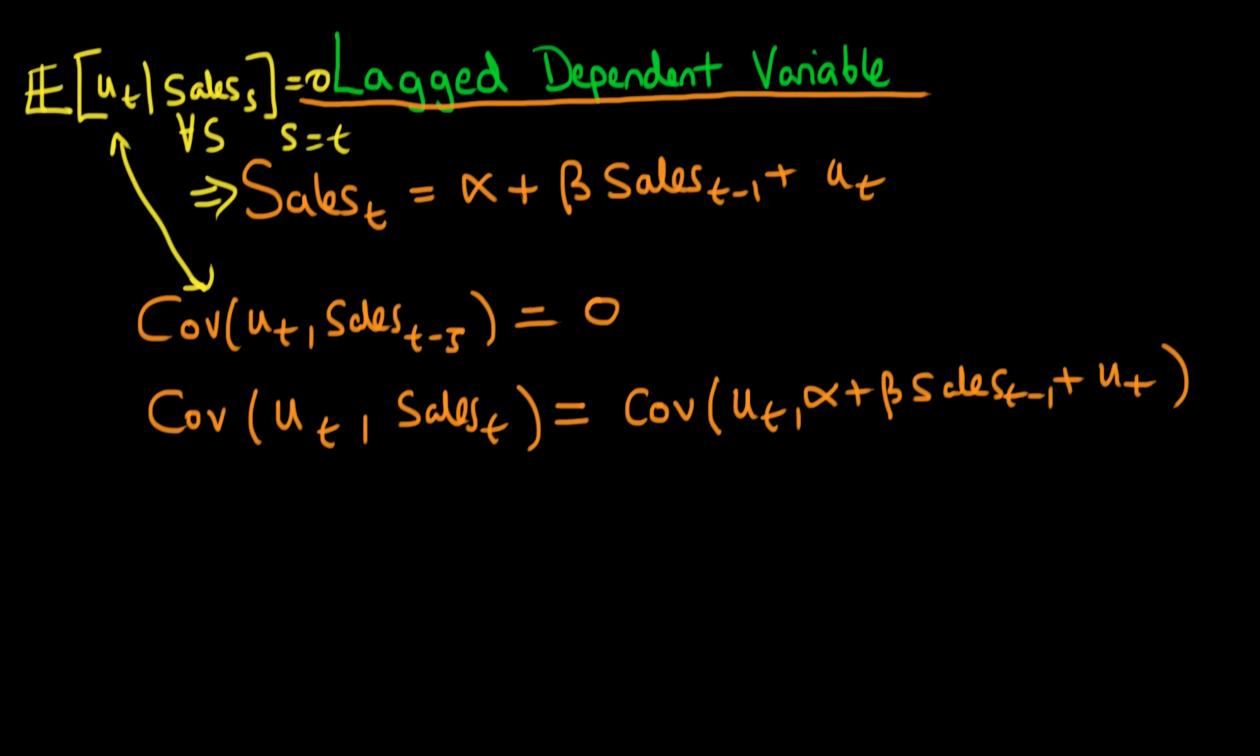And even though we can conclude that ut isn't correlated with alpha because it's a constant, and sales at time t minus 1 because there's no reason to suggest it would be, we cannot remove the covariance of ut with itself. And the covariance of ut with itself is just defined as the variance of ut, which we might say is some constant sigma squared, which doesn't equal 0.